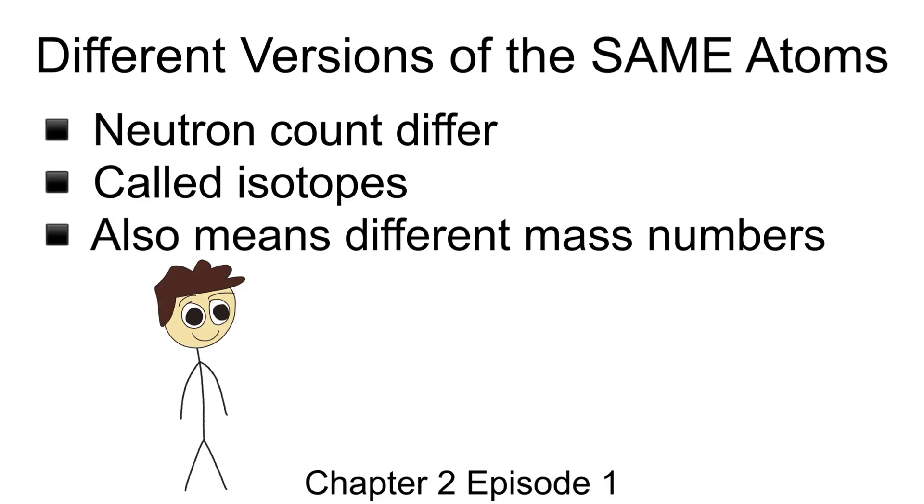Take, for example, all the possible isotopes of a carbon atom. Normally, a carbon atom would have about six protons and six neutrons. But if you add a seventh or even eighth neutron to the atom, this is still going to be a carbon. Obviously though, the mass number has changed.